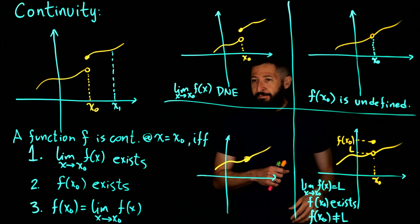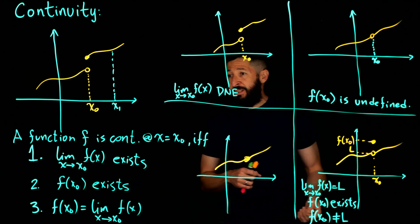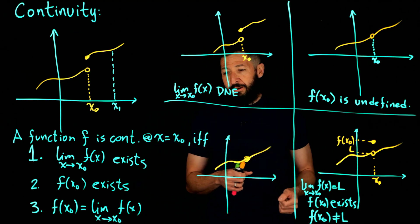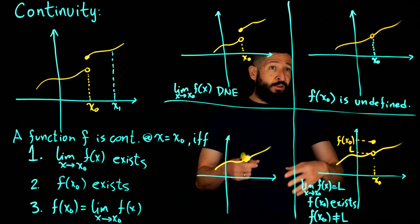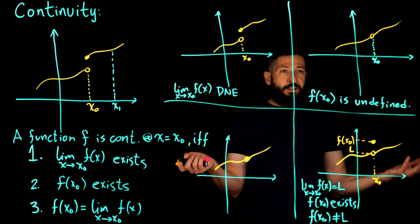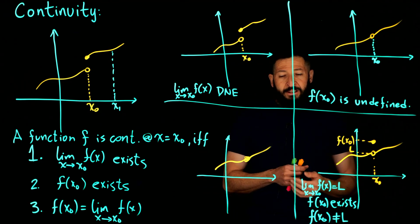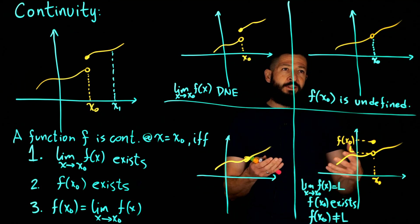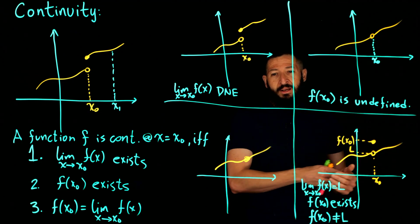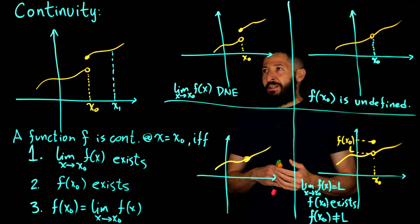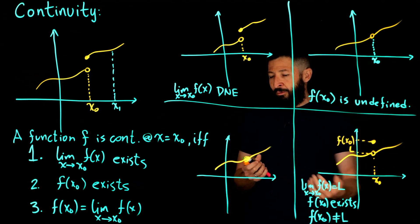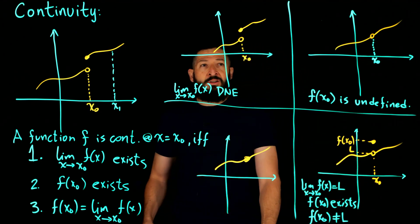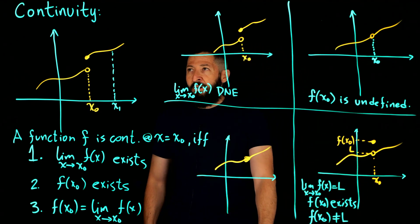Those are the three conditions for continuity: one, the limit exists; two, the function is defined at X_naught; and three, the function value and the limit match — they are equal. If all three are satisfied, we say the function is continuous at X equals X_naught. If you want continuity on an entire interval, the function must be continuous at every point of that interval. That is your definition of continuity.